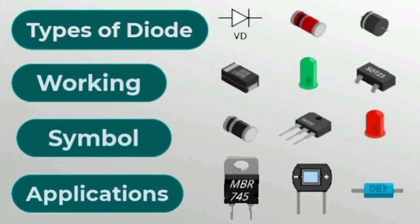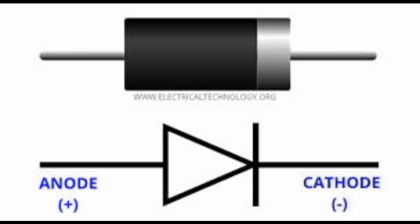Welcome back. In this video we are going to see about P-N junction diode. See this image. This is how a diode looks like. This is the symbol of diode.